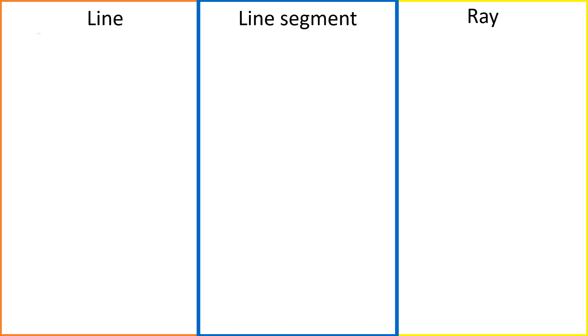Now let us understand the difference between a line, a line segment, and a ray. Here I am going to draw one line, one line segment, and one ray — observe all of these.